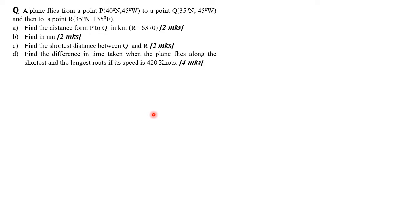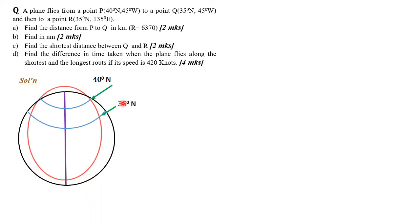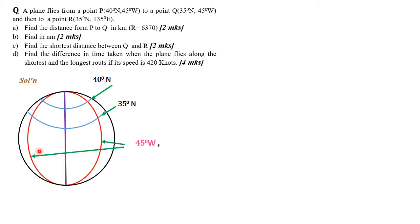We have points P, Q, and R given. We are told to first find the distance from P to Q in kilometers. Let's start by imagining the shape of the earth as a perfect sphere — we know it's not, but we assume it is to apply concepts of distances along its surface. The first arc indicated is 40 degrees north, the next is 35 degrees north, and the two meridians are 45 degrees west and 135 degrees east.